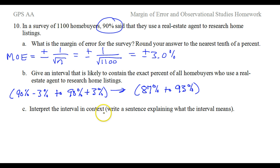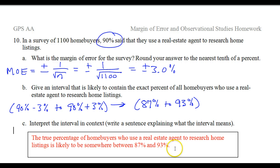Interpret the interval in context, in other words, write a sentence about it. Notice how in my sentence I incorporate as many of the words from the original problem as possible. In the survey, 90% of home buyers said that they use a real estate agent to research home listings. The true percentage of all the home buyers who use a real estate agent to research home listings is likely to be somewhere between 87% and 93%. That's 90% plus or minus the margin of error.